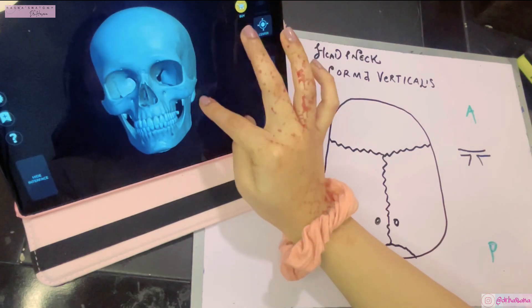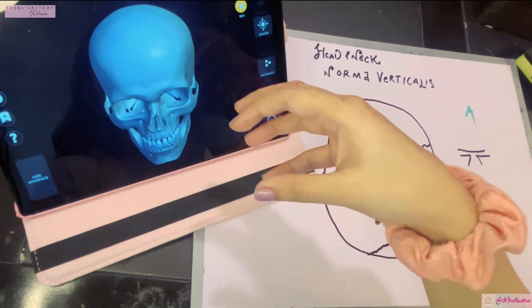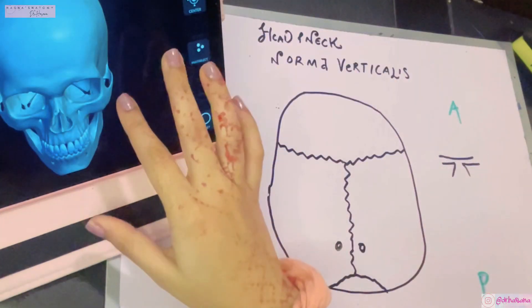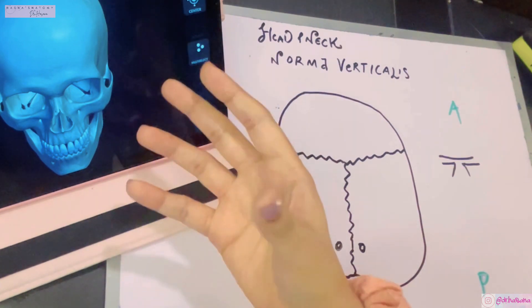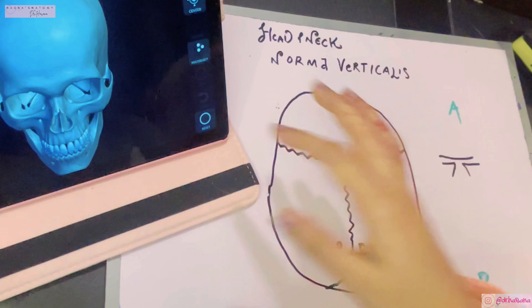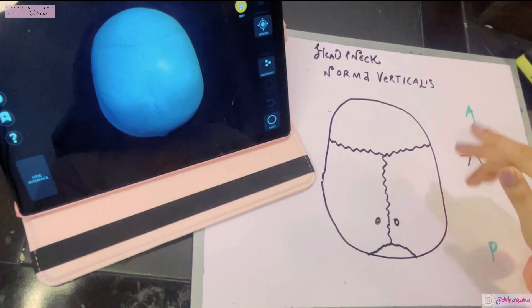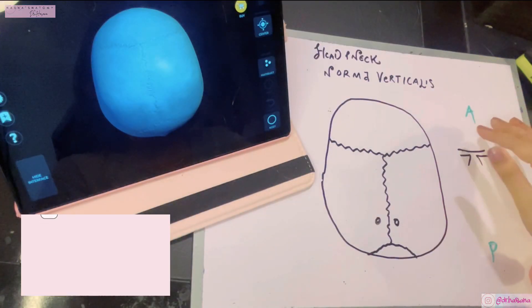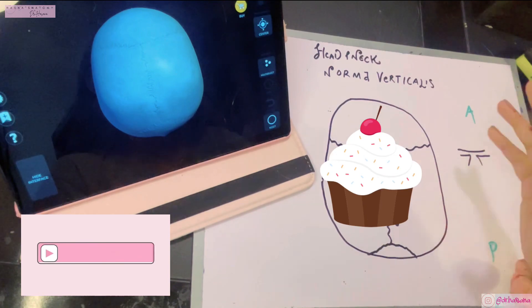The skull is a very important bone that is protecting your brain, the most complex organ and the most intellectual organ of your body. Let's begin talking with our first topic, which is the norma verticalis. Before we get started, I request you all to subscribe to my channel as I make anatomy a piece of cake. Let's get on with the video.